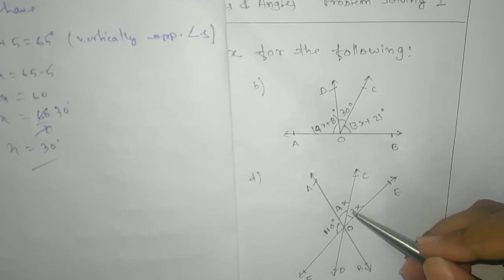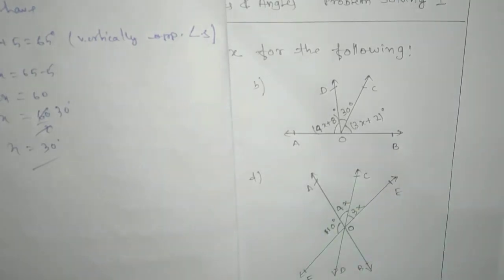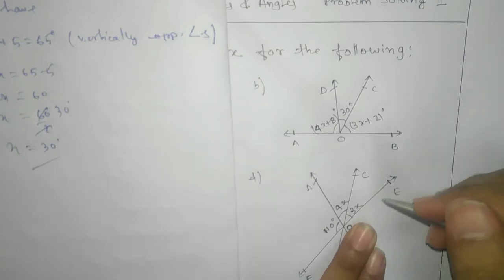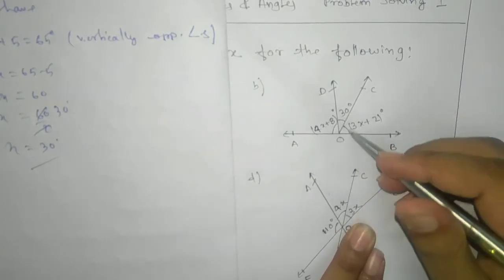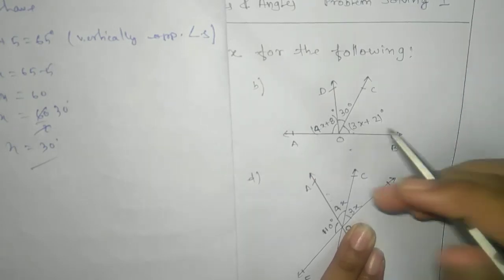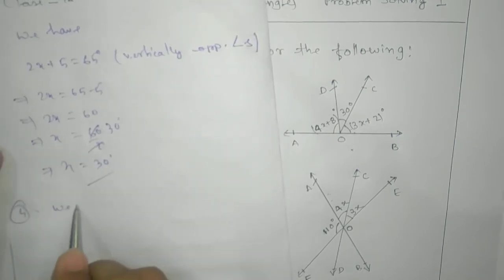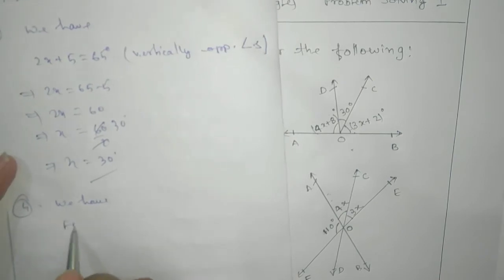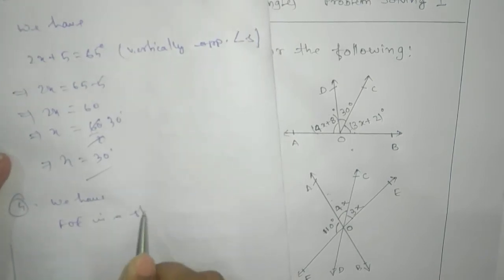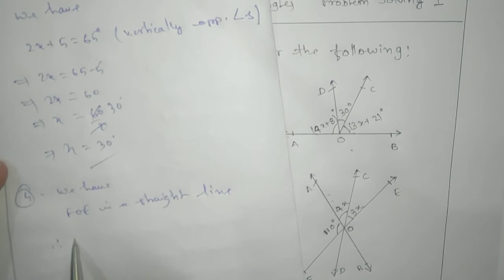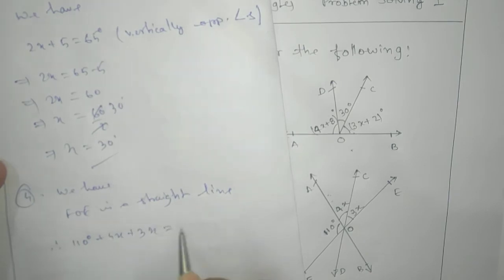You can see that the fourth one is quite similar to the second one. Because if we focus on FOE, it is a straight line and shows the same thing. So here we need to write: FOE is a straight line. Therefore 110 plus 4X plus 3X equals 180 degrees.